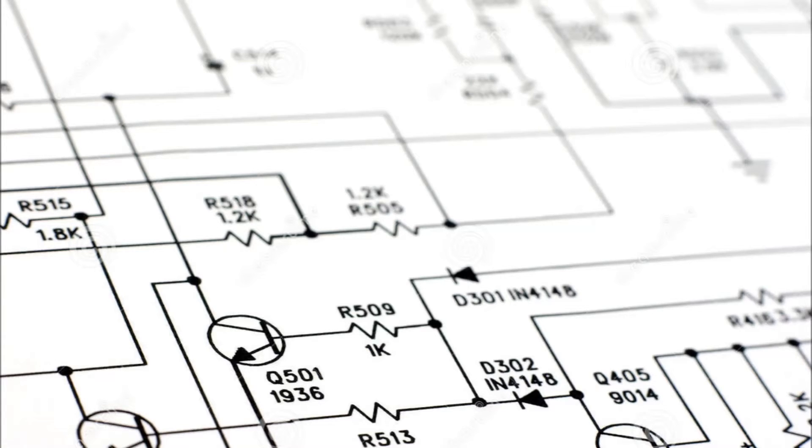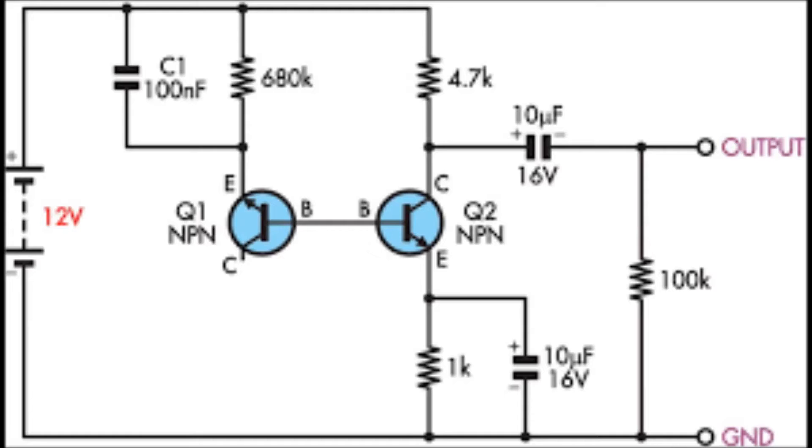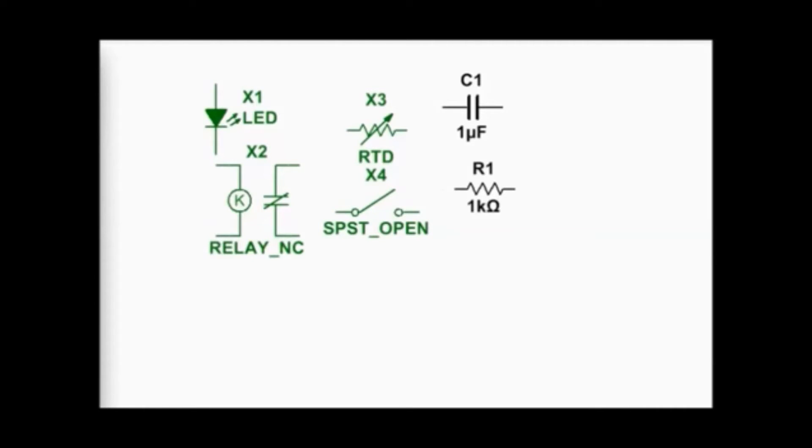A schematic diagram is very widely used in electronics. What a schematic diagram is, is just a basic representation of the circuit components used and how they are connected in that circuit. In order to read a schematic diagram, there must be a basic understanding of what the symbols in the schematic diagrams represent. And these symbols are called schematic symbols.